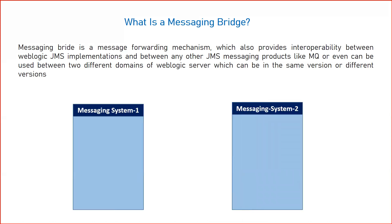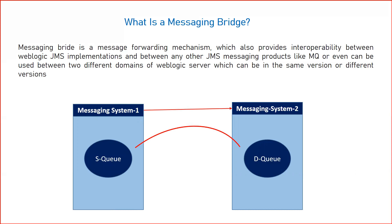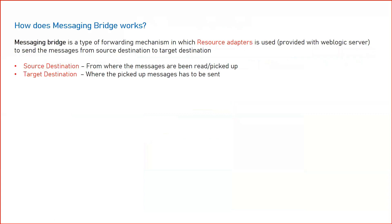You could have two different WebLogic domains or two different messaging systems from different service providers that want to share messages. For that you need a queue — a logical entity that stores physical messages. The messaging system one sends a message into the source queue, from where the message moves to the destination queue required by system two, with the Messaging Bridge moving messages from source queue to destination queue.